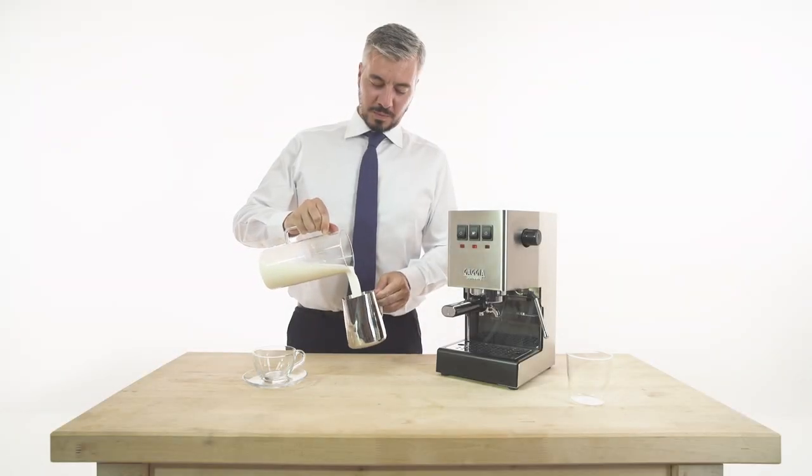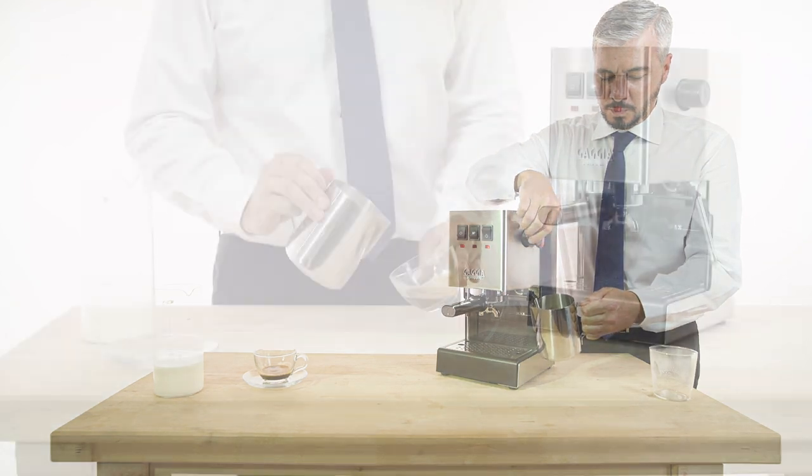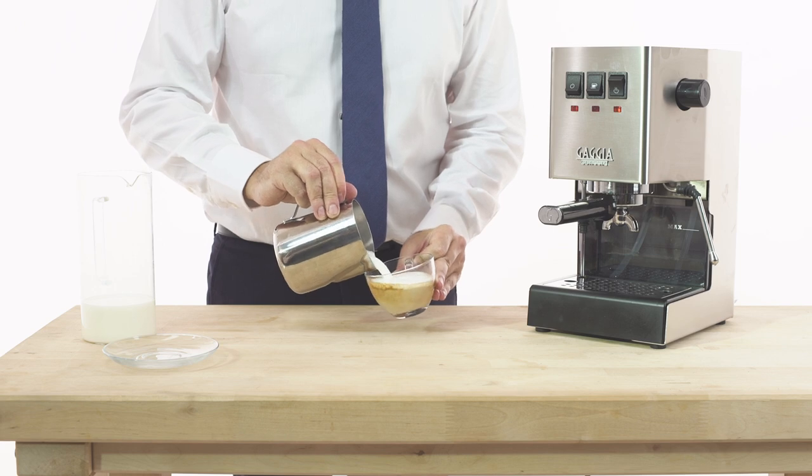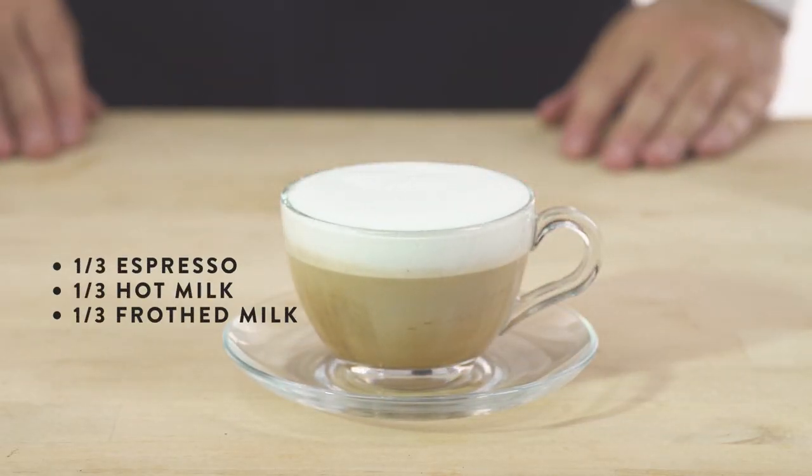Today we will explain how to prepare a creamy cappuccino based on the traditional recipe. Cappuccino is one of the most beloved Italian drinks in the world. It is composed of equal parts of espresso, hot milk, and milk froth.